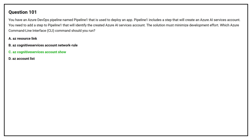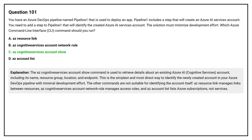The correct answer is Option C: AZ Cognitive Services Account Show. The AZ Cognitive Services Account Show command is used to retrieve details about an existing Azure AI Cognitive Services account, including its name, resource group, location, and endpoint. This is the simplest and most direct way to identify the newly created account in your Azure DevOps pipeline with minimal development effort.